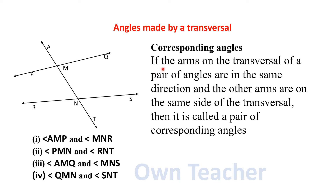Angles made by a Transversal. If the arms on the transversal of a pair of angles are in the same direction and the other arms are on the same side of the transversal, then it is called a pair of corresponding angles.